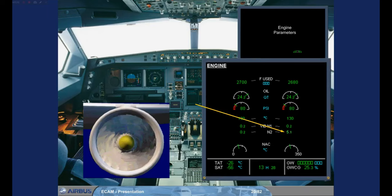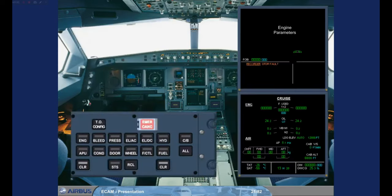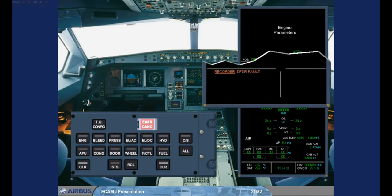Now, let's look at what happens when ECAM detects a minor system failure. When a failure occurs leading to a loss of redundancy or loss of a system that does not affect the safety of the flight — for example, a Digital Flight Data Recorder fault — the ECAM system will inform you by displaying an amber caution message on the Engine Warning Display. At the same time, the two CLR keys on the ECAM control panel will illuminate.